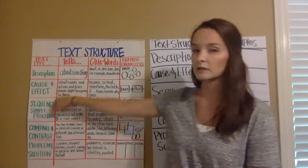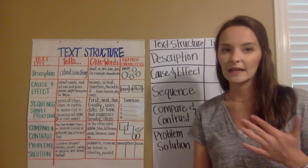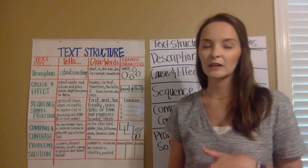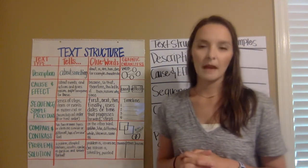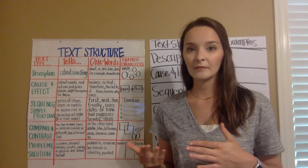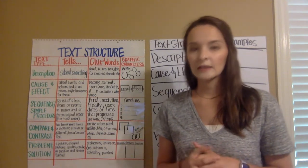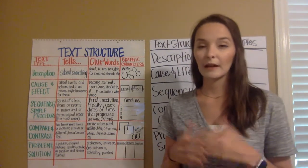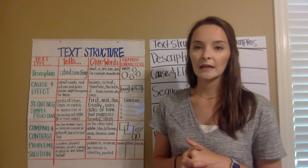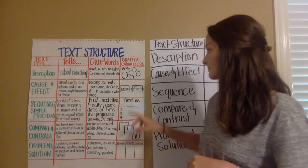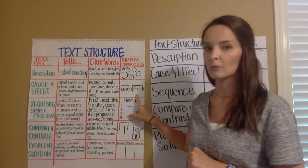The second text structure we're going to talk about is cause and effect. Cause and effect involves events and actions and gives you the reasons that something happens. For example: I got a flat tire because I ran over a stick. The cause would be that I ran over a stick, and the effect would be that I got a flat tire.